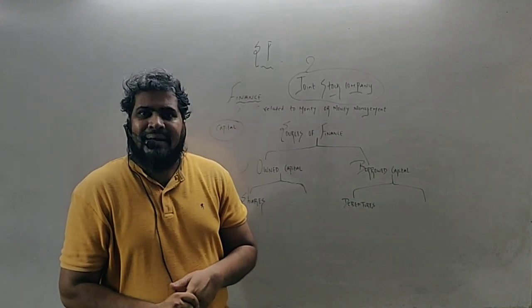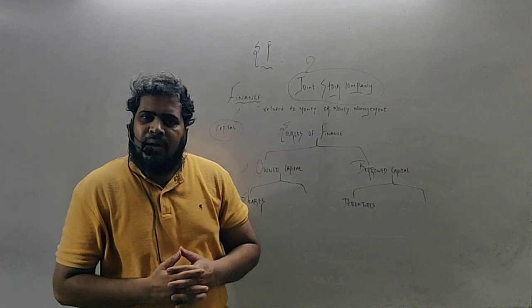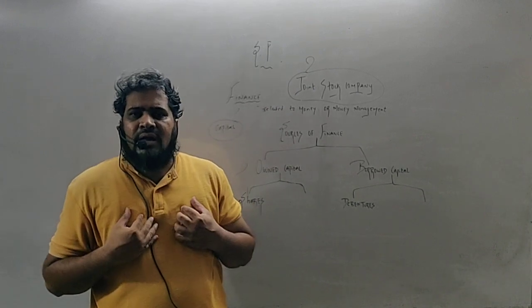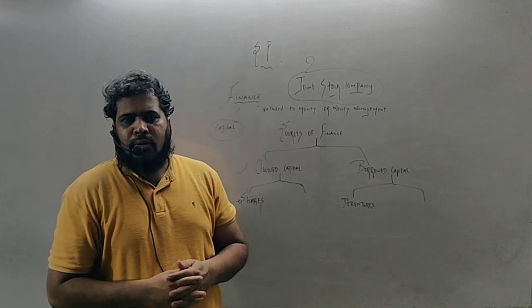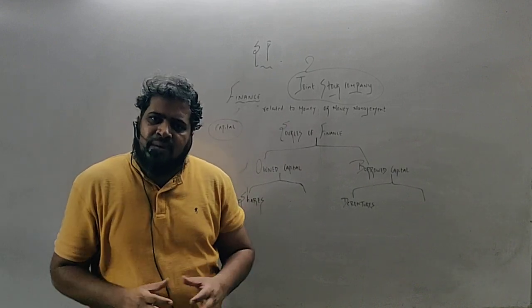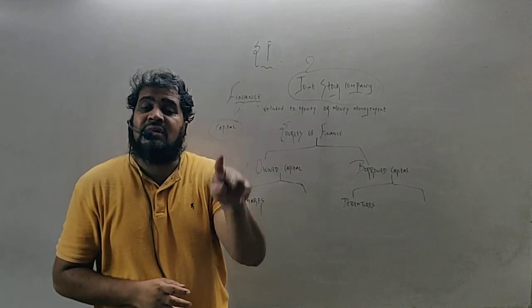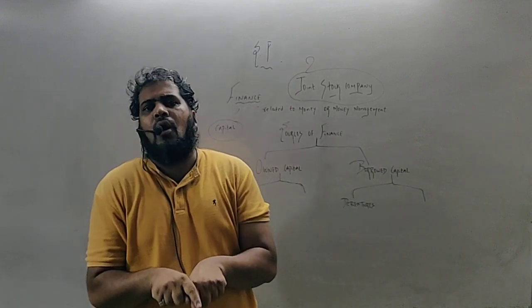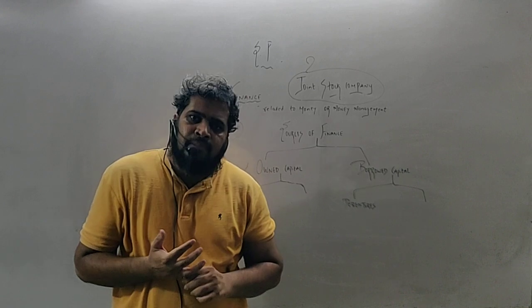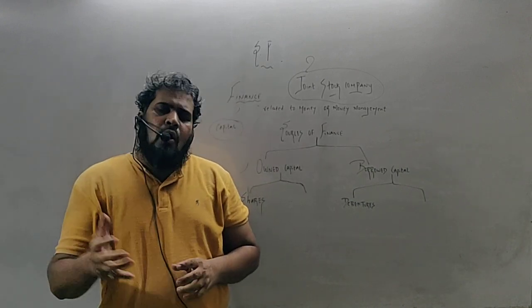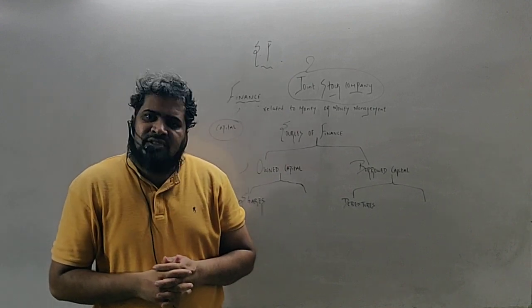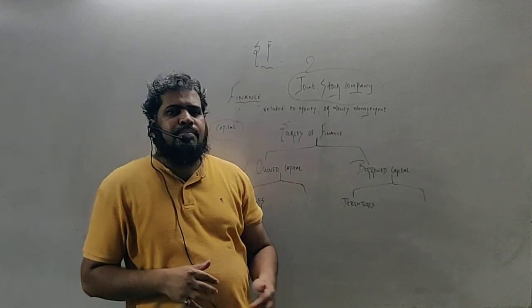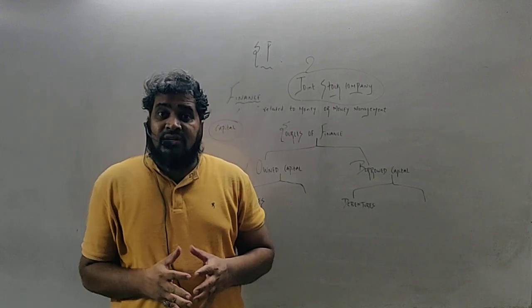To understand this video in a better way, I would like to frame an imaginary example. Success Commerce Academy is a joint stock company and Ali sir is the promoter of this joint stock company. Success Commerce Academy needs to collect finance, and finance collection has only two sources. As I told you, a joint stock company is created by law. But whatever I am doing, I have to do within the framework of the law. So, Success Commerce Academy is a joint stock company. And the company needs finance, money, capital. There are two sources. First is owned capital and second is the borrowed capital.